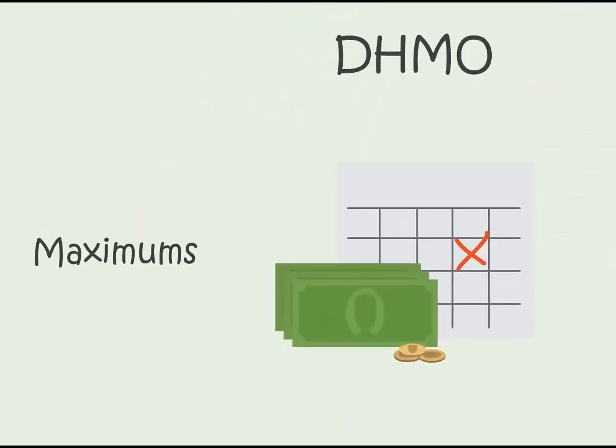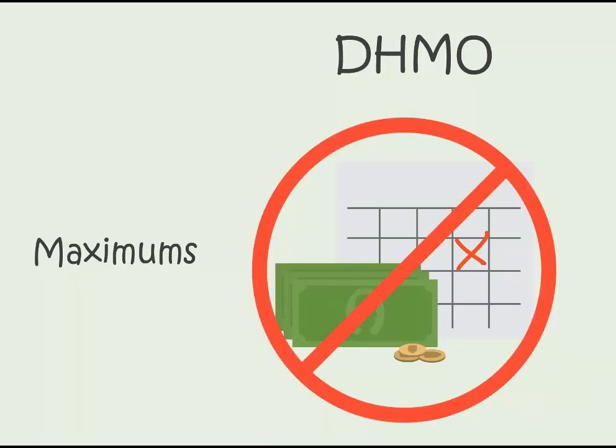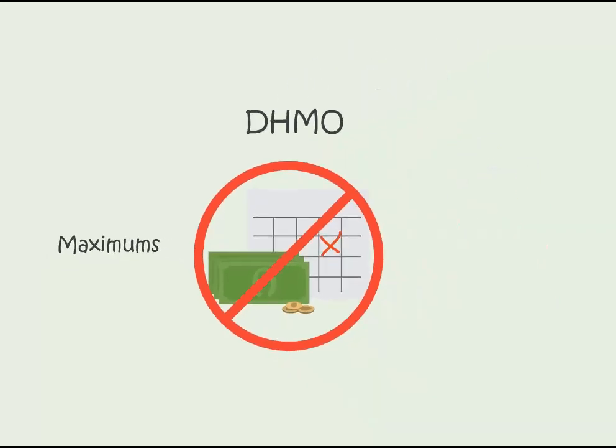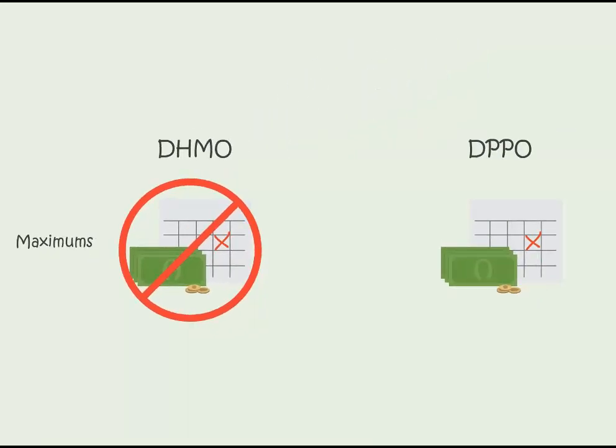Maximums. An annual maximum is the highest amount an insurance company will pay towards your dental care in a specific period of time, usually January to December. There are no calendar maximums on a DHMO plan — you simply pay your copayment for covered procedures, but be sure to read any limitations or exclusions that may apply. A DPPO plan does have a calendar maximum, and this amount varies by insurance company and by plan.